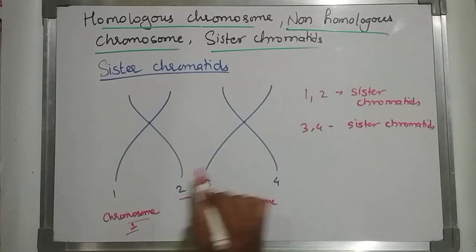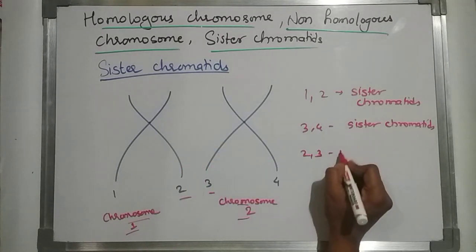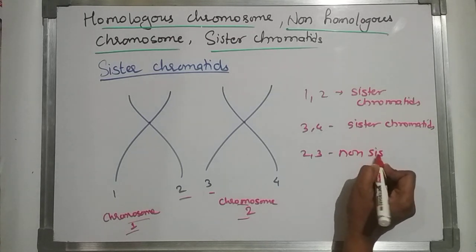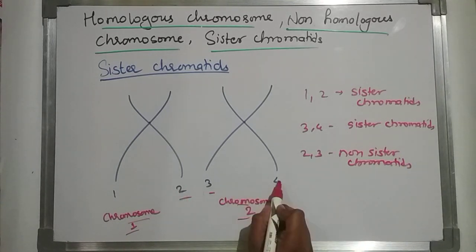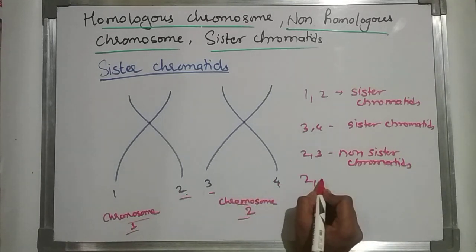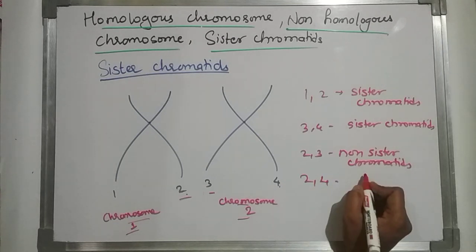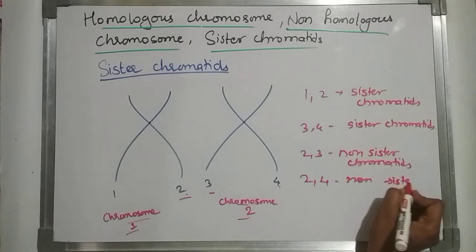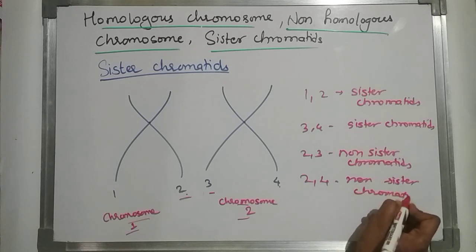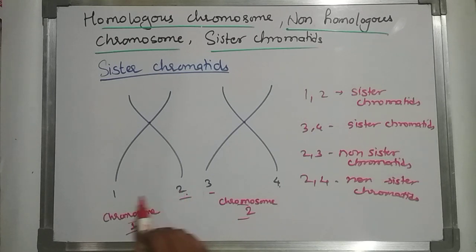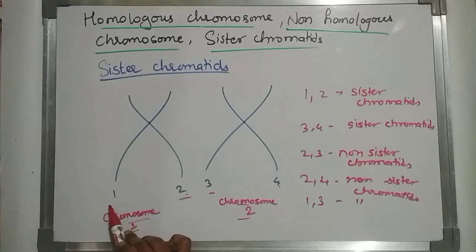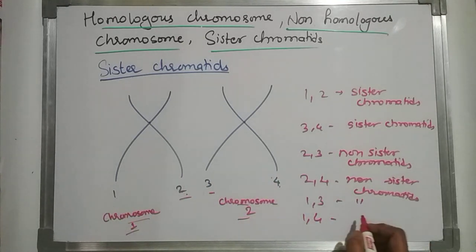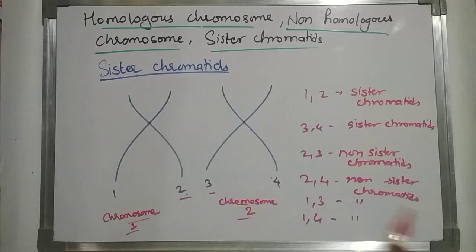Non-sister chromatids means chromatids from different chromosomes — for example, chromatid 2 and chromatid 3, or chromatid 2 and chromatid 4, or chromatid 1 and chromatid 3, or chromatid 1 and chromatid 4 are all non-sister chromatids. These are the distinctions between sister chromatids and non-sister chromatids.